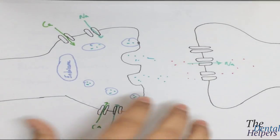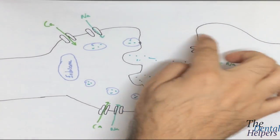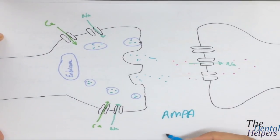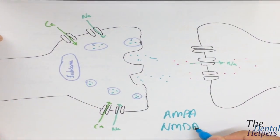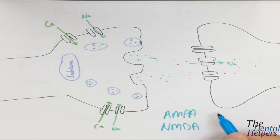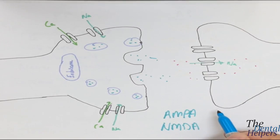Looking at receptors, there are two main types important to know. One is the AMPA receptor: L-glutamate acts on the AMPA receptor throughout the CNS, allowing sodium and potassium ions to pass through, leading to an EPSP in response to L-glutamate. Since L-glutamate is excitatory, this results in an excitatory postsynaptic potential.